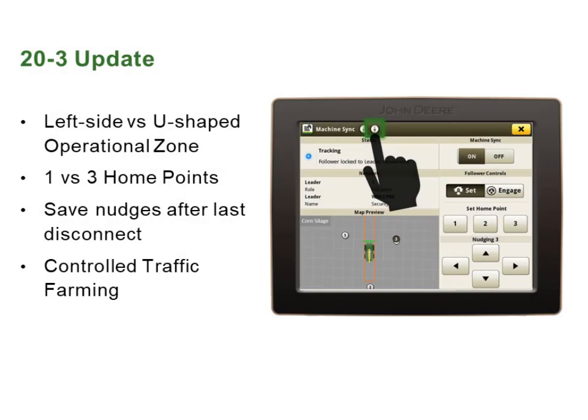With a 20-3 update, based on your operation, there may be additional settings you need to adjust prior to using Machine Sync. After setting up your equipment and equipment manager, if the default settings are not what you desire, the user can adjust the type of operational zone and size of the U-shape operational zone, as well as define how many home points they want to be able to set.